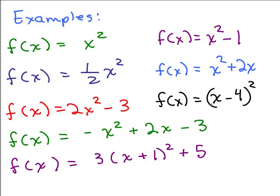You'll notice this one, f(x) equals (x minus 4) squared. If you multiply that out, you'd have x squared minus 8x plus 16. So that's also in the correct form. Same thing with this last one, f(x) equals 3(x plus 1) squared plus 5. But what's important in all of these is that there is an x squared term.